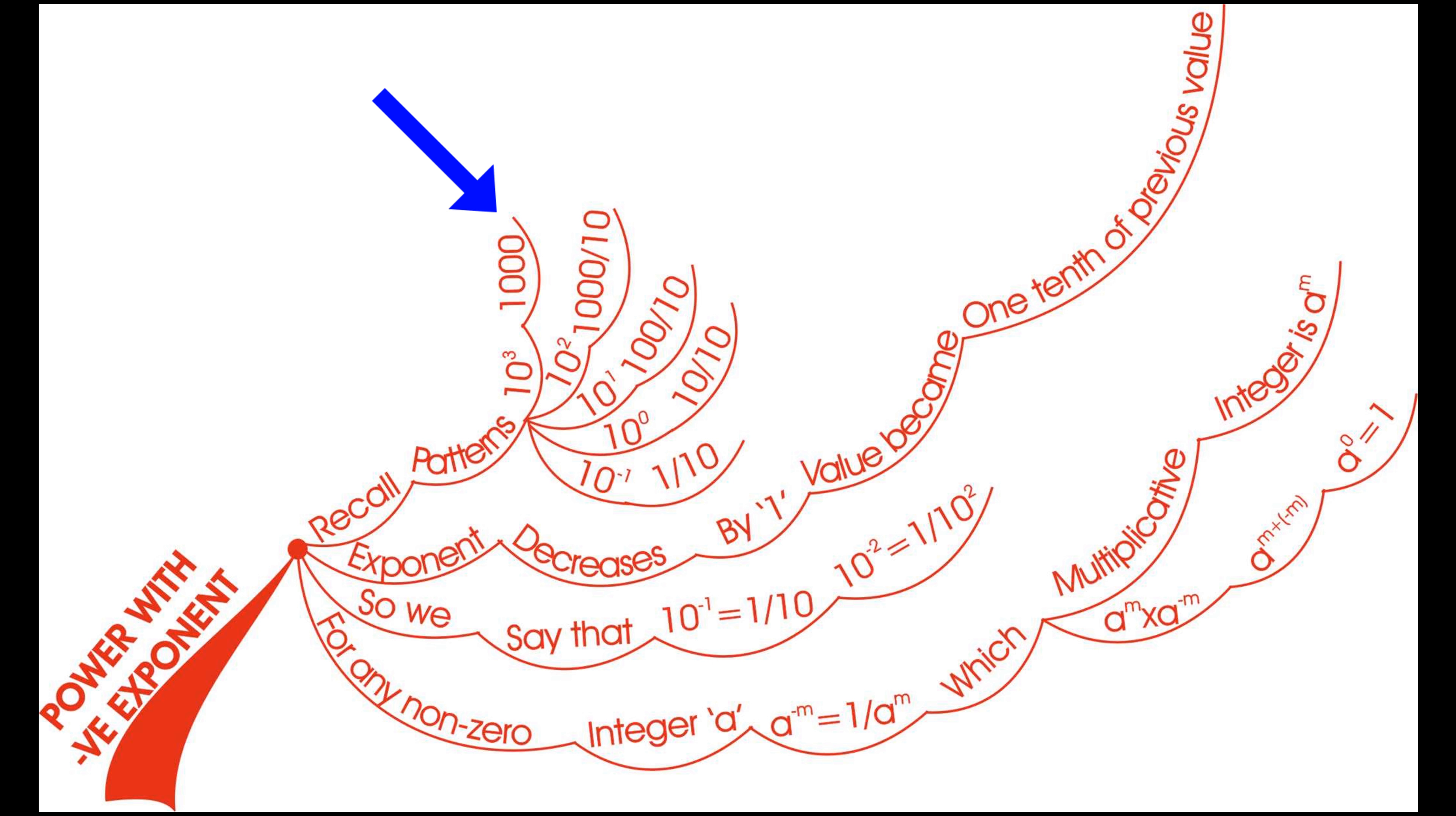10 to the power of 3 is equals to 1000. 10 to the power of 2 is equals to 1000 by 10. 10 to the power of 1 is equals to 100 by 10. 10 to the power of 0 is equals to 10 by 10.